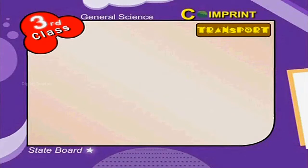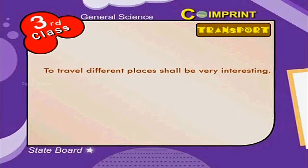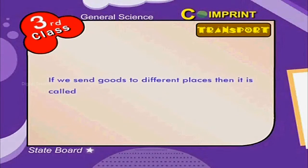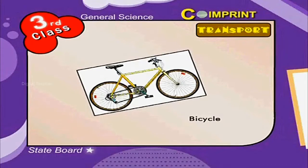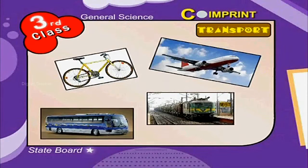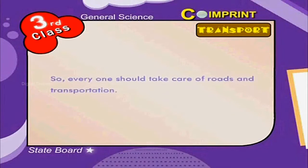Transport Facilities. To travel different places shall be very interesting. If people go from one place to another we say it is a journey. If we send goods to different places then it is called a transport. The different modes of transport are bicycles, buses, trains, aeroplanes etc., which are called transport facilities. So everyone should take care of roads and transportation.